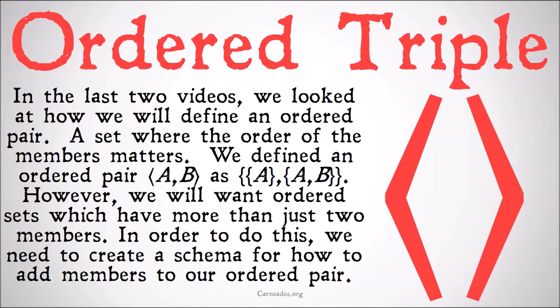However, we will want ordered sets which have more than just two members. We may want a whole entire list that is ranked in a particular order. In order to do this, we need to create a schema for how to add members to our ordered pair.